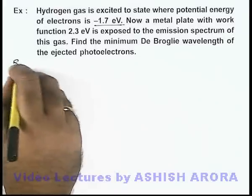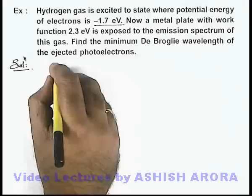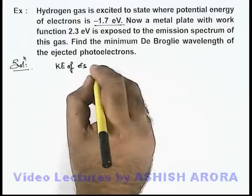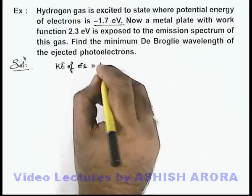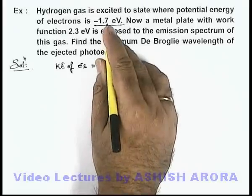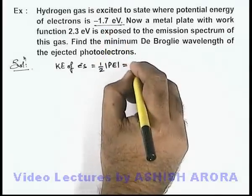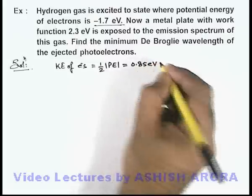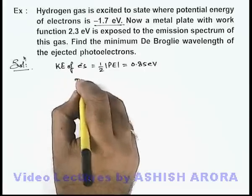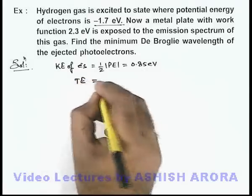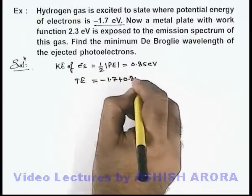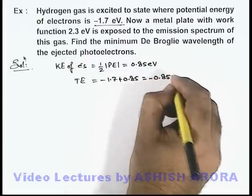If we analyze this situation, we can directly state that the kinetic energy of electrons in the excited state is half of the magnitude of the potential energy. So when we substitute potential energy as minus 1.7, this will be 0.85 electron volt. That means in this excited state, the total energy of the electron will be negative 1.7 plus 0.85, which gives minus 0.85 electron volt.